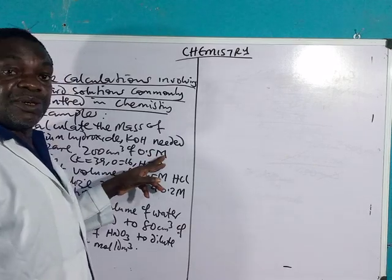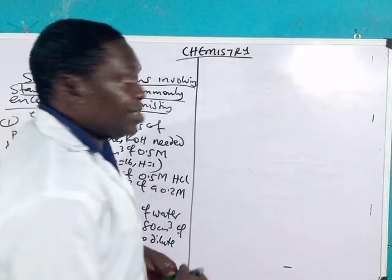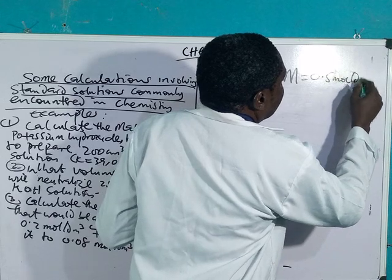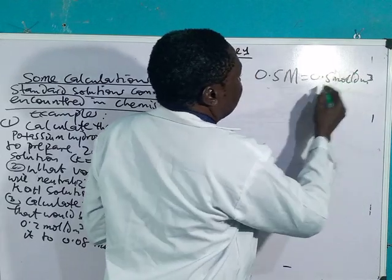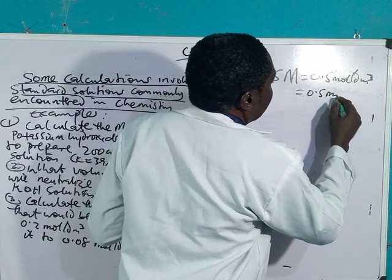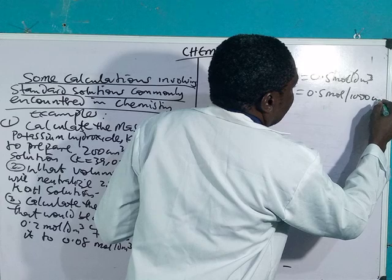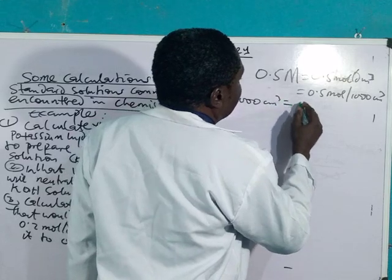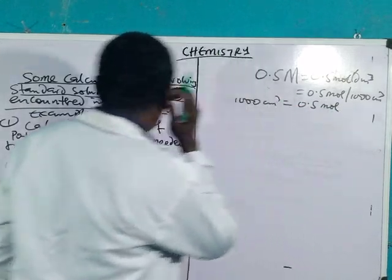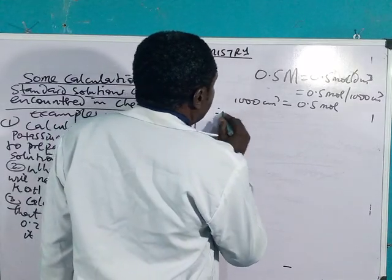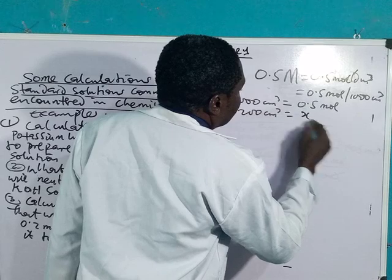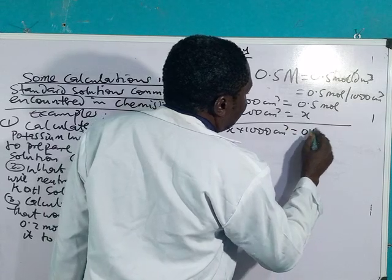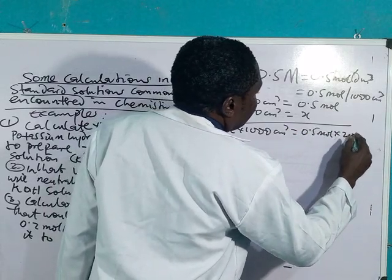What you must know first of all is to convert this 0.5 molar. This is the way chemists normally label their reagent bottles. Now, 0.5 molar equals 0.5 mole per dm³. Remember, this 0.5 mole is also equivalent to 0.5 mole per 1000 cm³. Therefore, 1000 cm³ is equivalent to 0.5 mole. Then 200 cm³ equals x.